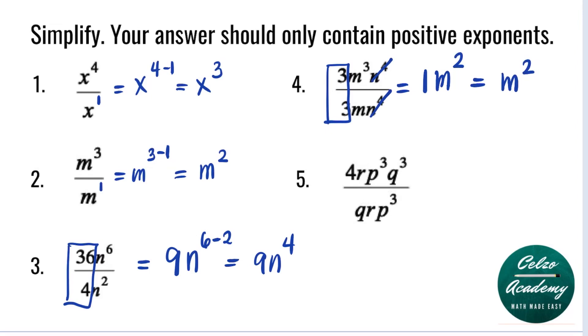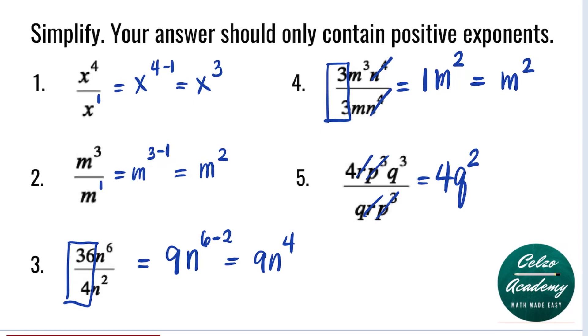Question 5: 4r p to the 3rd q to the 3rd, all over qr p to the 3rd power. For this question, the denominator is the same thing as 1qr p to the 3rd power. So the first step is to divide the coefficients 4 divided by 1 and that is of course 4. Now let's simplify the variables starting with the variable p. We have p cubed divided by p cubed, so that cancels out p cubed on top and p cubed below. Next, the variable q. We have q to the 3rd divided by q to the 1st, so subtracting the powers 3 and 1, that will be square. For the variable r, we have r to the 1st divided by r to the 1st, that will also cancel out. So the answer for number 5 is 4q squared.